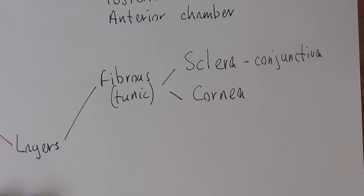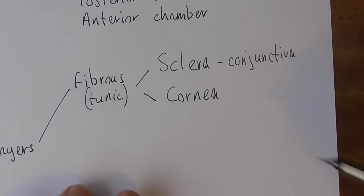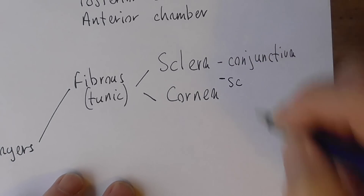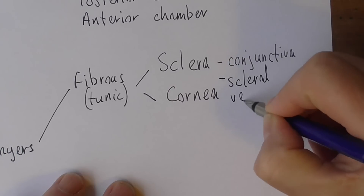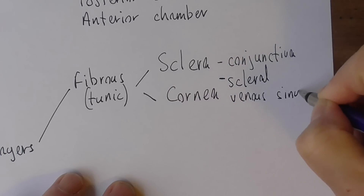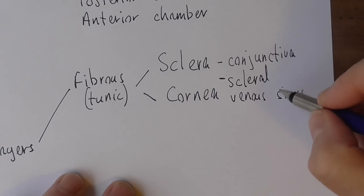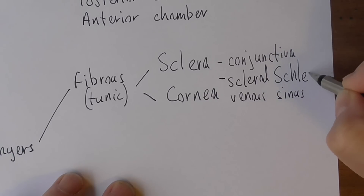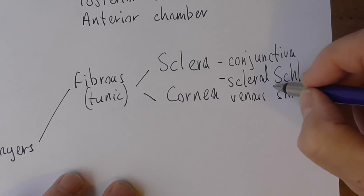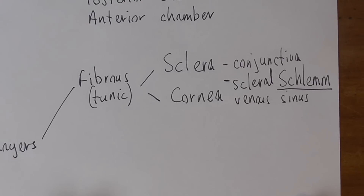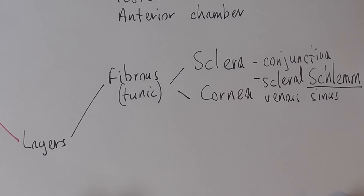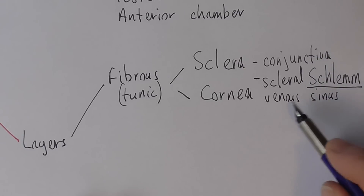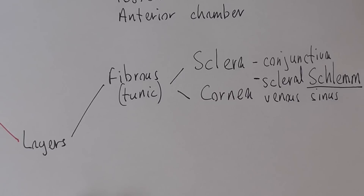Between the sclera and the cornea there is the scleral venous sinus, also called the canal of Schlemm, after the German anatomist Fred Schlemm — a fascinating character who was once arrested for cutting a body up in a graveyard, but did his original work back in the 1830s. He discovered this scleral venous sinus, which is called venous but is more of a lymphatic vessel, to drain away the excessive aqueous humour.